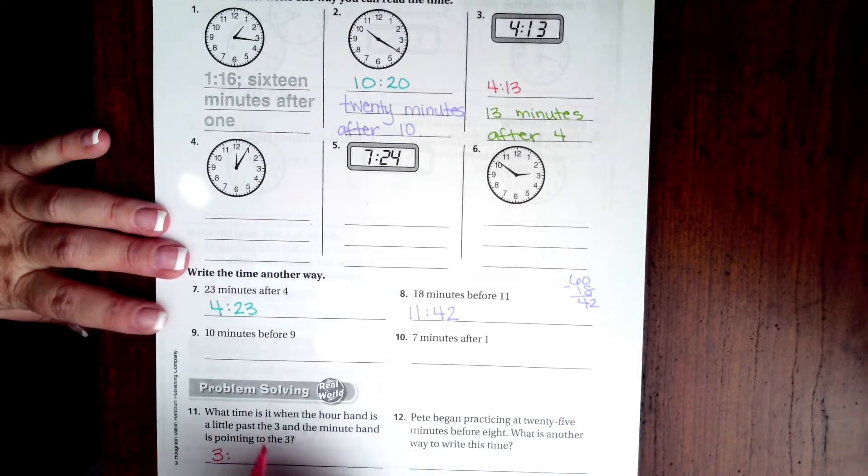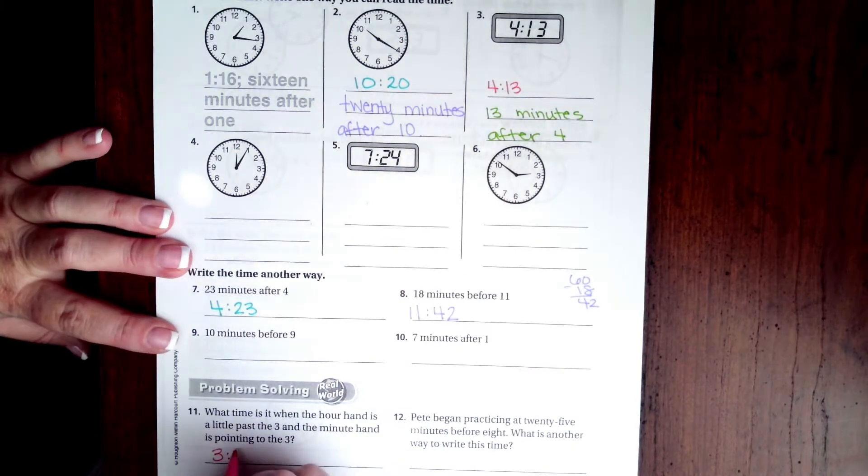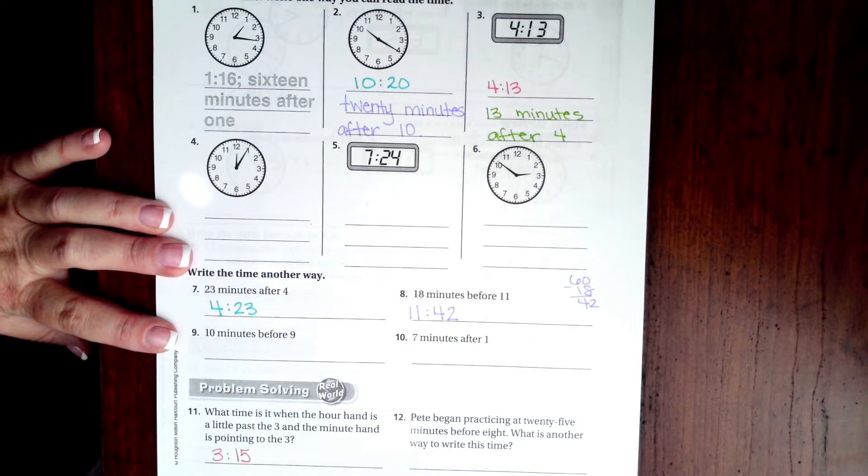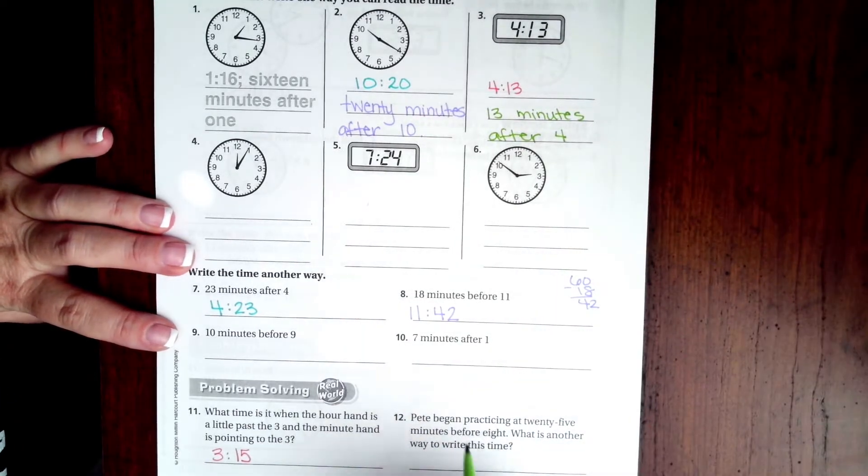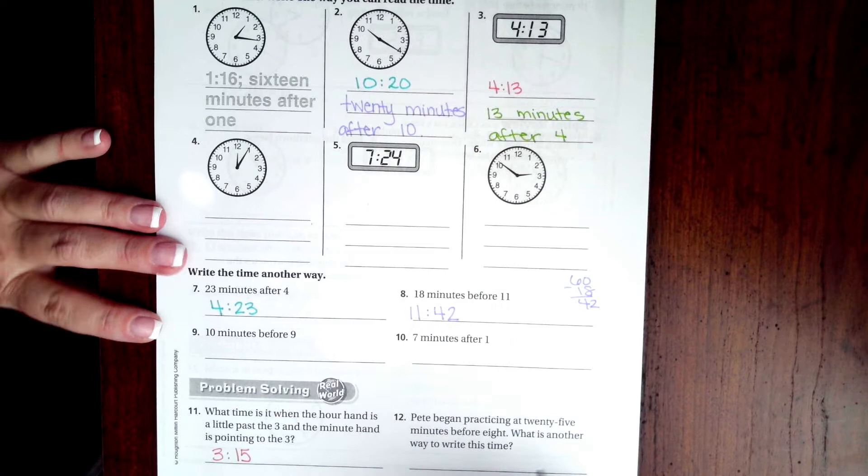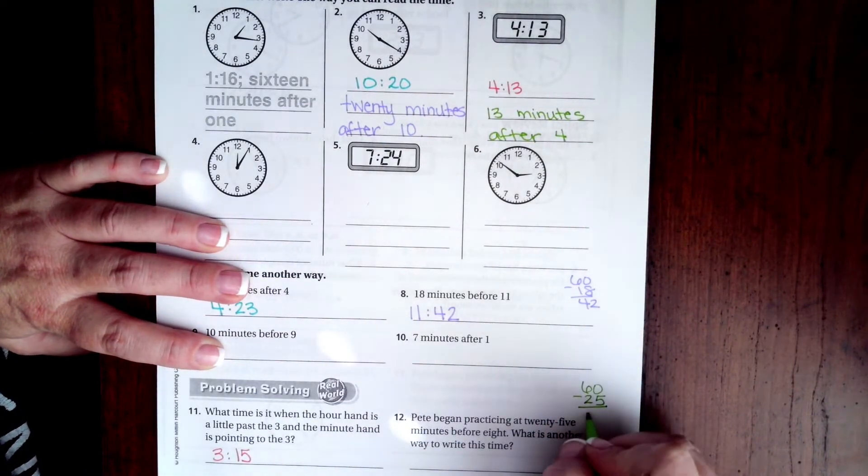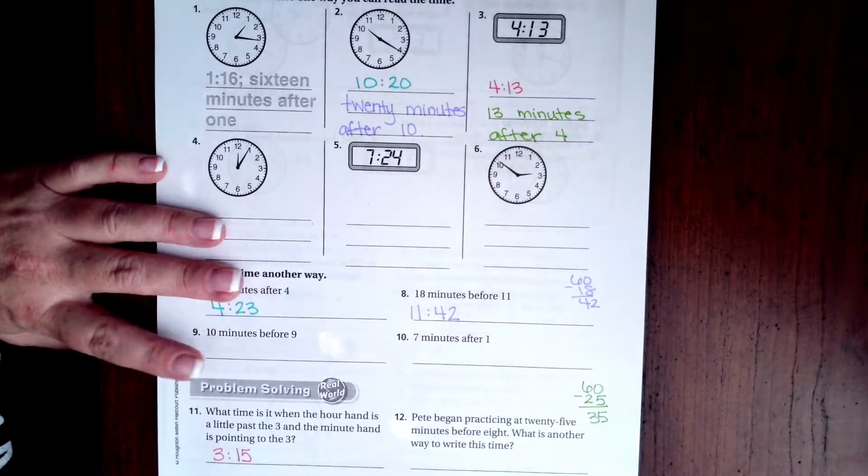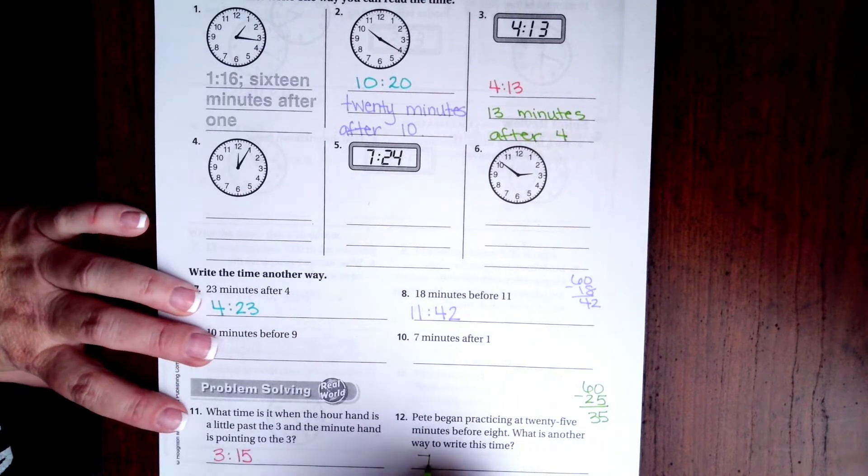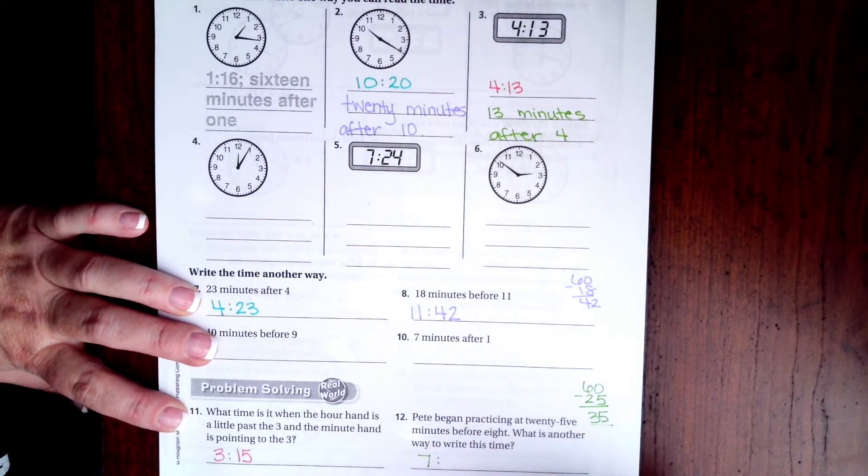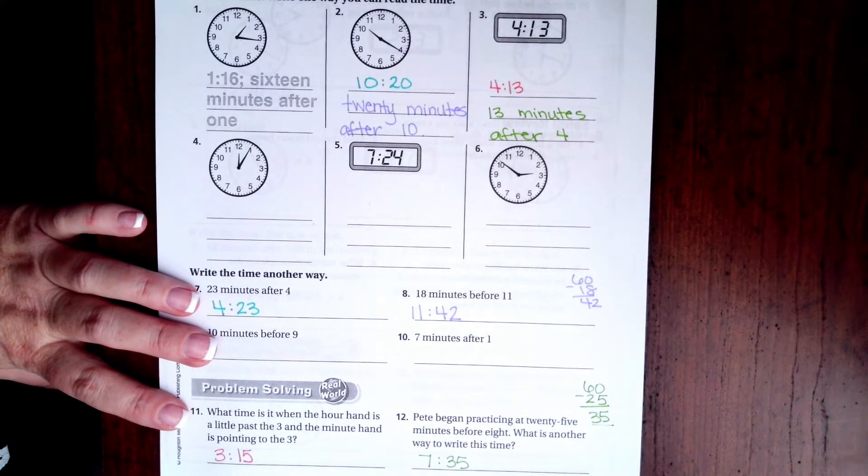Pete began practicing 25 minutes before eight. Again, we're going to take that 60 and we're going to take away the 25. That leaves us with 35. Before eight means it hasn't hit eight o'clock yet, so that's going to be 7, and then we have 35 minutes left. That's the other way to write the time.